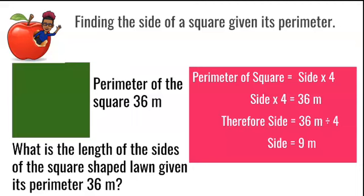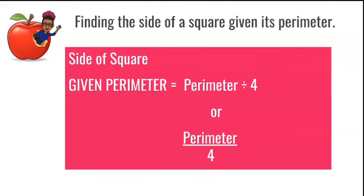When we divide 36 by 4, we get a length of 9 meters. So the length of one side of the square equals 9 meters. Here's our formula: to find the side of a square when given the perimeter, divide the perimeter by 4. That 4 represents the 4 equal sides of the square — so side equals perimeter divided by 4.